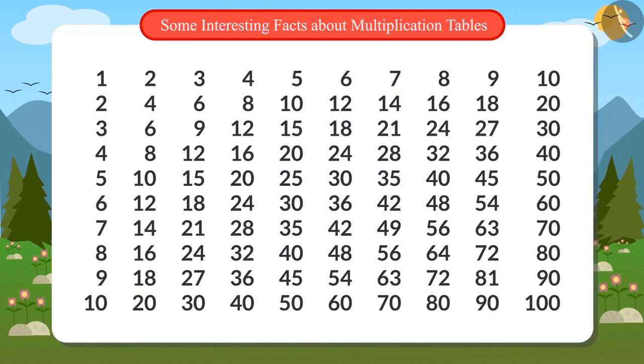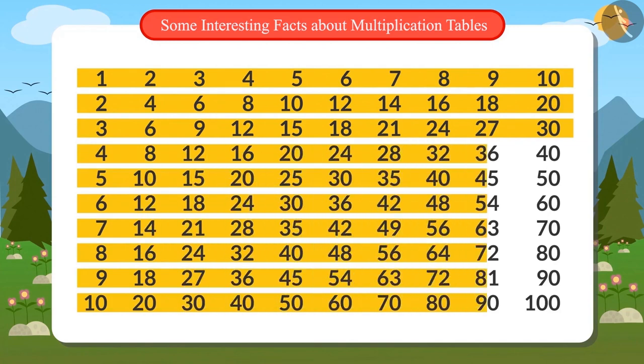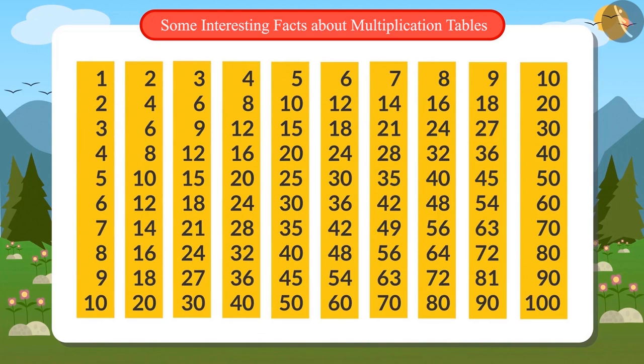The first line shows the table of 1. Second shows that of 2 and the third of 3. So whichever line you read from left to right becomes the table of the number. And reading the lines top to bottom also gives the table of a number.